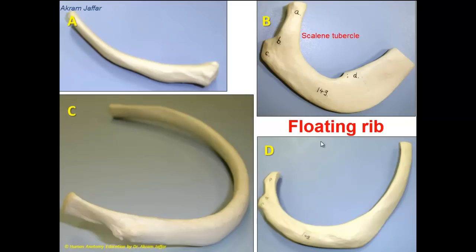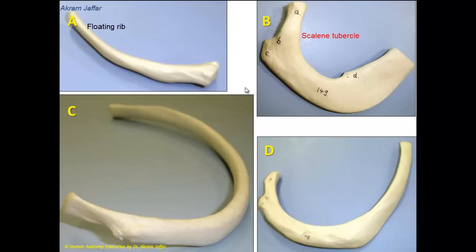Floating rib — by definition, is the rib whose costal cartilage is not attached to the sternum at all, neither directly nor indirectly. These are ribs 11 and 12. So rib A is either rib 11 or rib 12. Both the 11th and 12th ribs are short, they have a single facet on their head, there is no tubercle and no neck. Both of them are floating ribs.